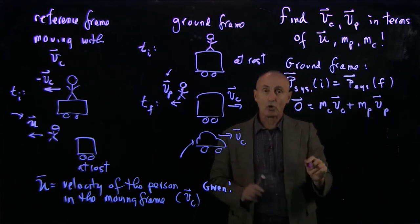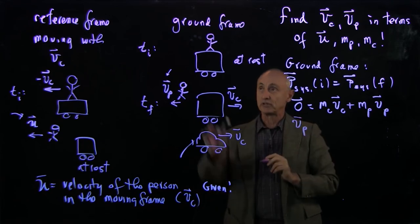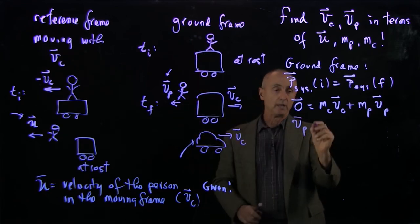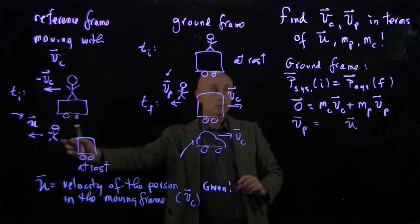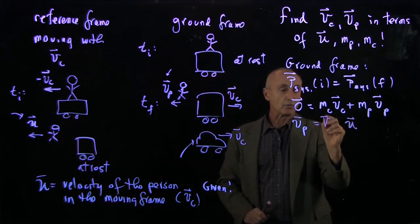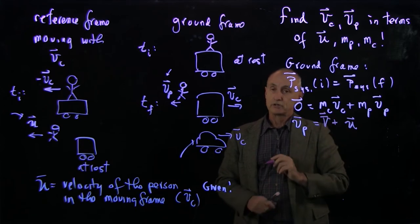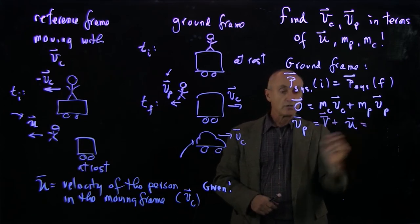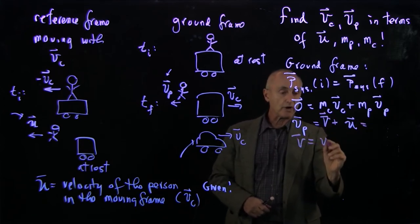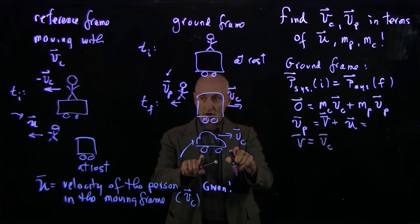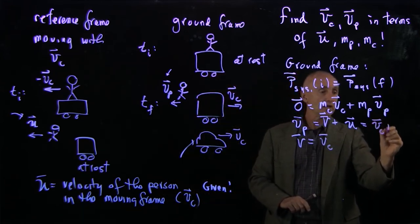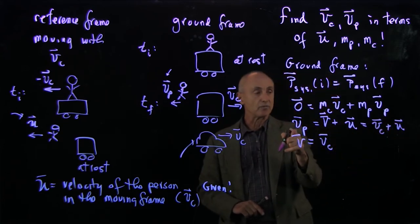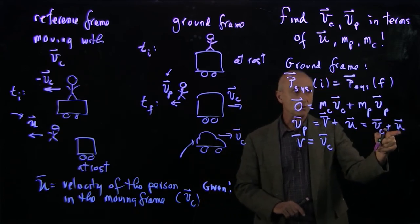Now recall that we also showed that the velocity of the person in the ground frame is related to the velocity of the person in the moving frame by adding the relative velocity of the two frames. The relative velocity of the two frames is the velocity of the car, vc. So what we have is vc plus u. So this is how vp is related to u.